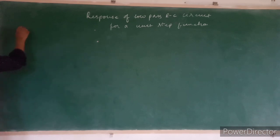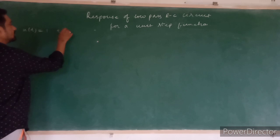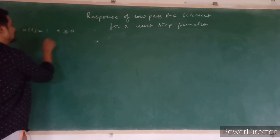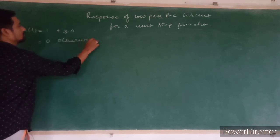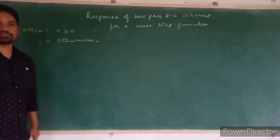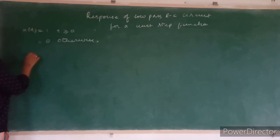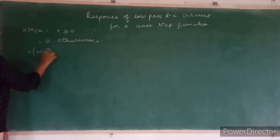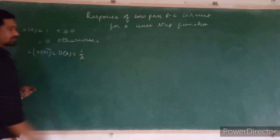The unit step function u(t) is equal to 1 for t greater than 0, and equal to 0 otherwise. This is the mathematical representation of a step function, and the Laplace transform of u(t) will be U(s), which is equal to 1 upon s.